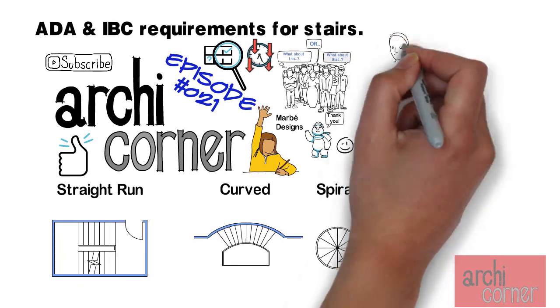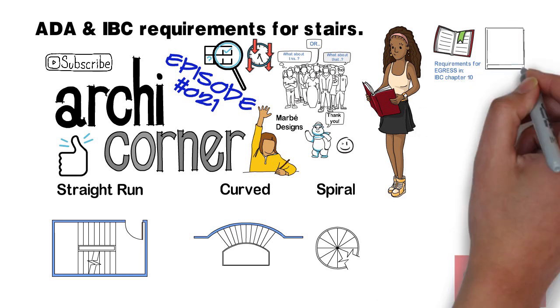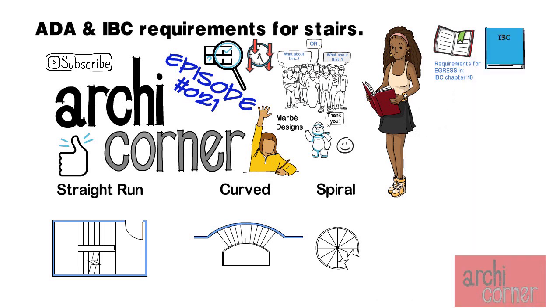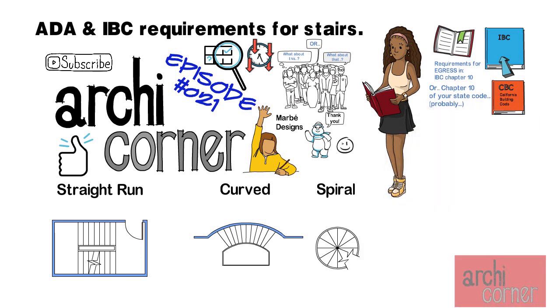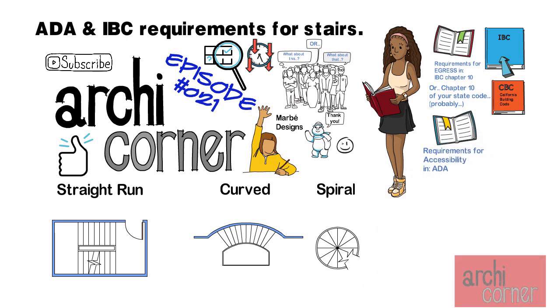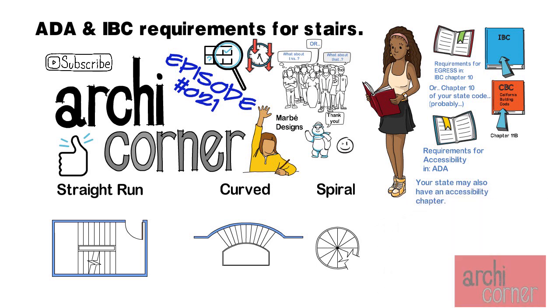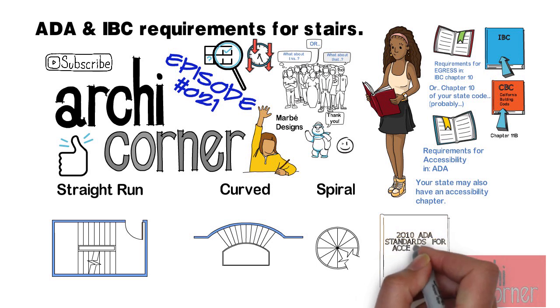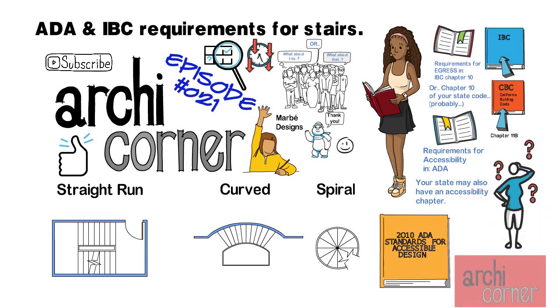Stair requirements are a bit difficult to find because the requirements can be found in two separate locations. Most stairs are used for egress. Therefore you will find some information on chapter 10 of the IBC, which is the international building code. Even though many states in the USA have their own state code, most states typically base their state building code on the IBC. So the sections that you see noted here will probably match your state. Probably. No guarantees, okay. For accessibility requirements you will need to reference the ADA, or if your state code has an accessibility chapter similar to how California has a chapter 11B, then you may want to reference that. For the purposes of this video we're going to be focusing on the ADA.